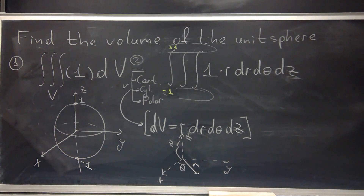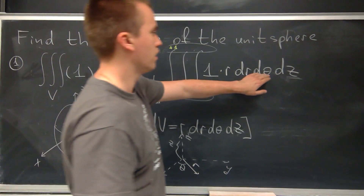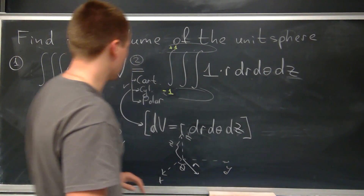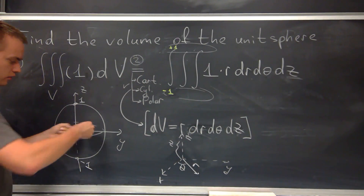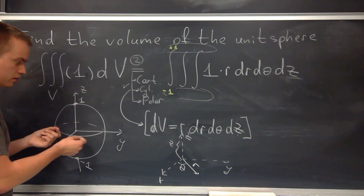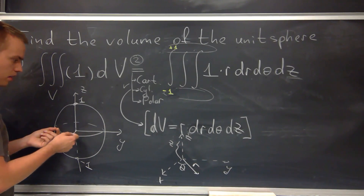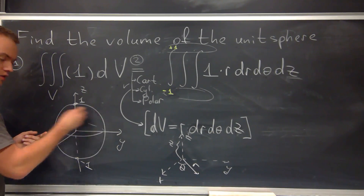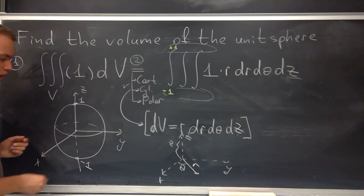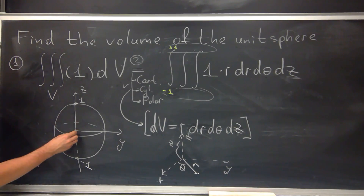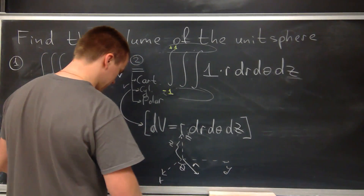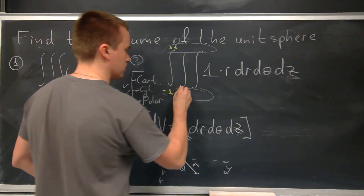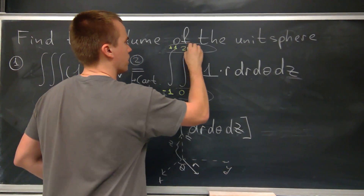The next bound is θ, which is also easy. What angle do you need to rotate your vector to describe the whole sphere? You need to rotate from 0 to 2π, so θ changes from 0 to 2π.